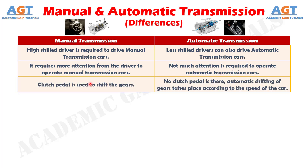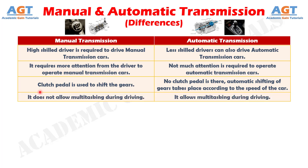Number 11. A clutch pedal is used to shift the gears in manual transmission, whereas in automatic transmission, no clutch pedal is there. Automatic shifting of gears takes place according to the speed of the car. Number 12. Manual transmission does not allow multi-tasking during driving, whereas automatic transmission allows multi-tasking during driving.